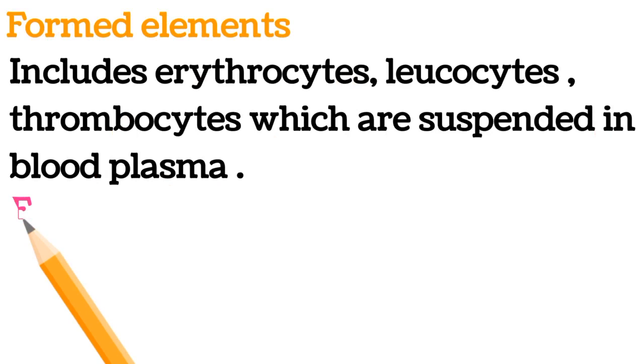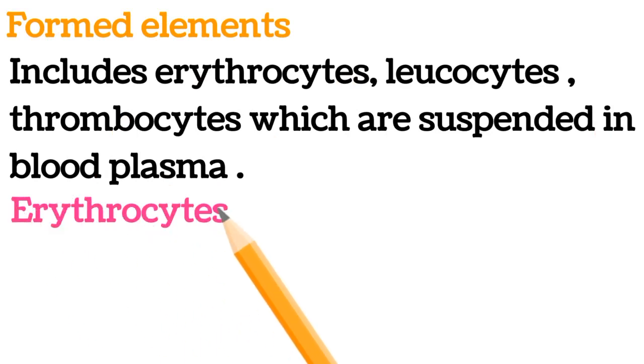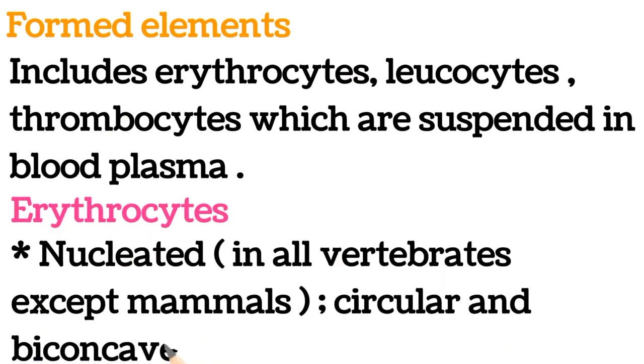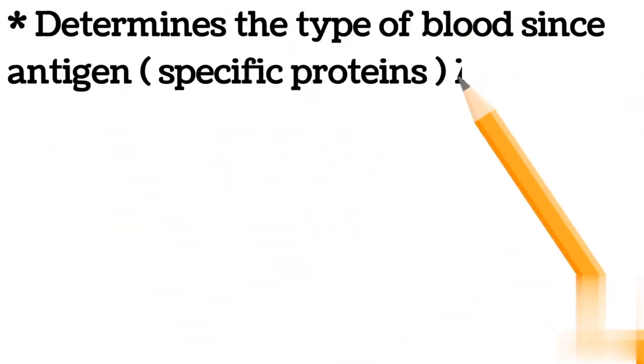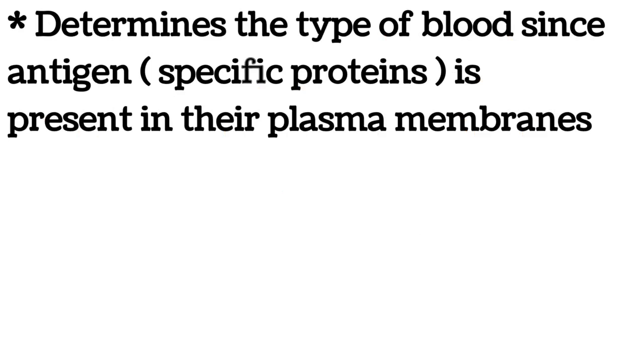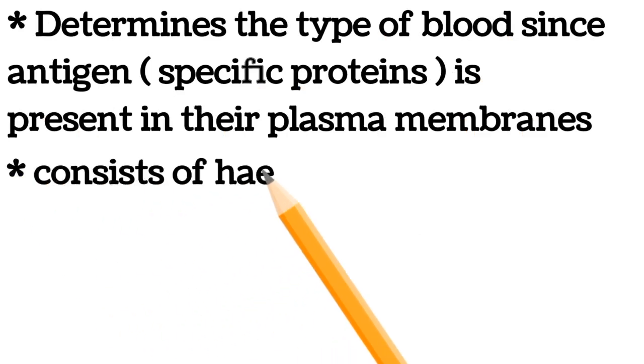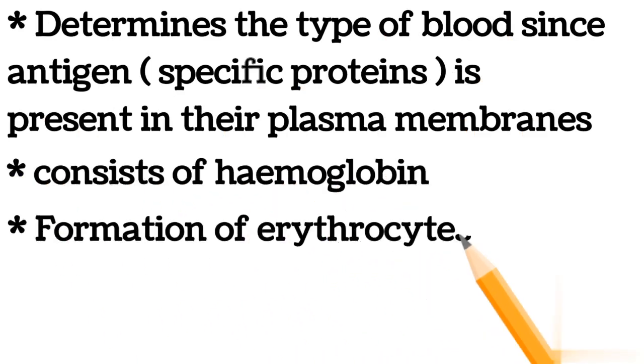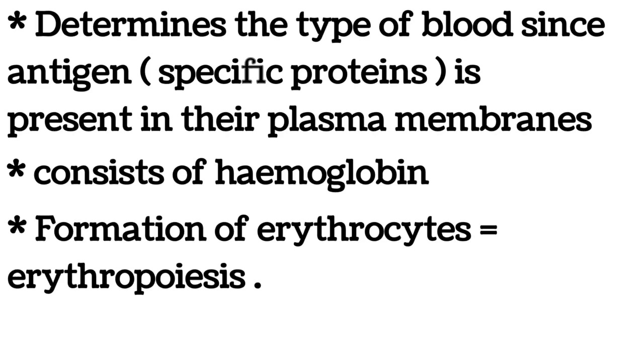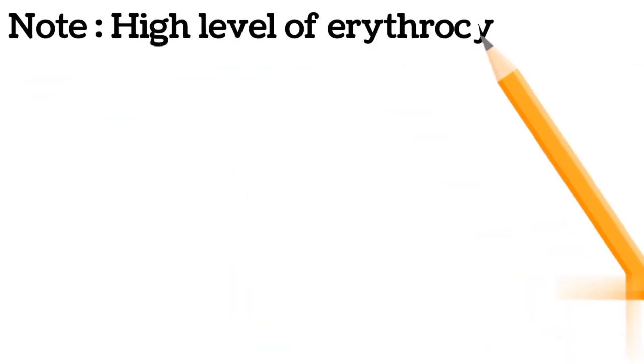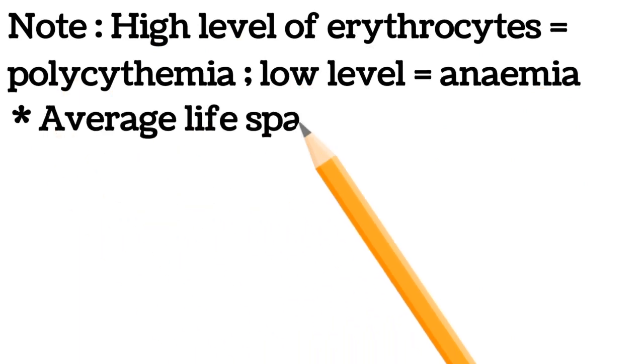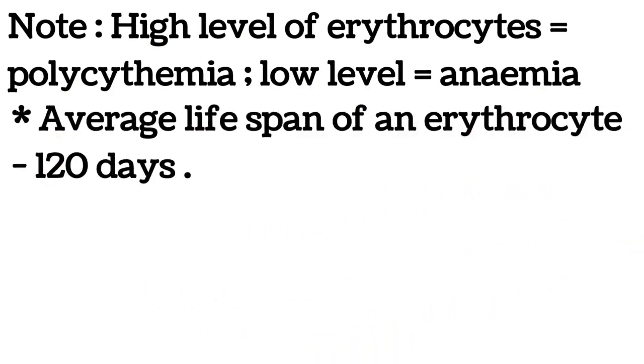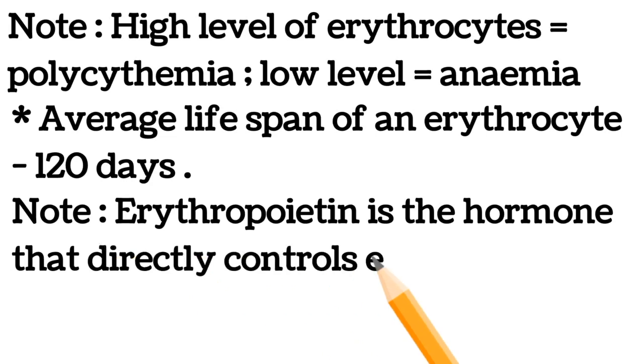Erythrocytes are nucleated in all vertebrates except mammals, circular and biconcave. They determine the type of blood since antigen-specific proteins are present in their plasma membranes. They consist of hemoglobin. Formation of erythrocytes equals erythropoiesis. Note: high level of erythrocytes equals polycythemia, low level equals anemia. Average lifespan of an erythrocyte is 120 days. Erythropoietin is the hormone that directly controls erythropoiesis.